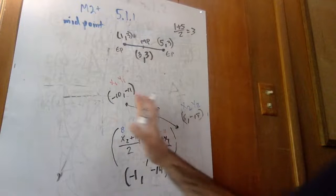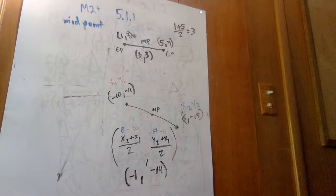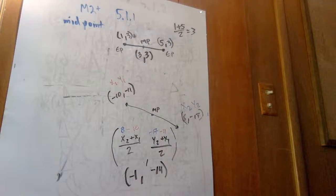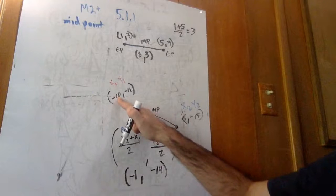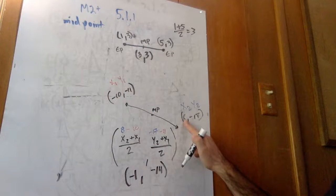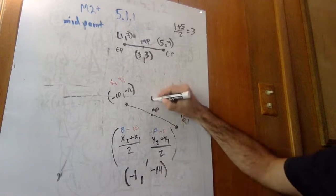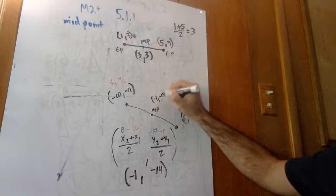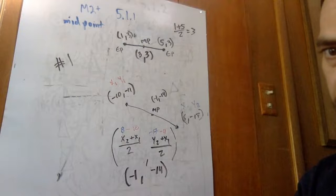We can see that the midpoint is approximately in the middle between x-values negative 10 and 8, and right in between x is negative 1. Right in between negative 11 and negative 17 is negative 14. So this point is (negative 1, negative 14) — that is problem number 1.